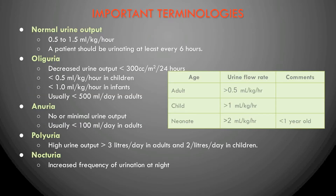Some important terminologies regarding nephropathies: normal urine output is 0.5 to 1.5 ml per kg per hour. For adults, the urine flow rate should be greater than 0.5 ml/kg/hr; for children, greater than or equal to 1 ml/kg/hr; and for neonates, greater than or equal to 2 ml/kg/hr.